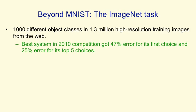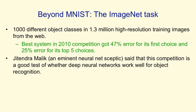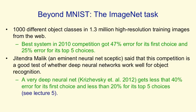Jitendra Malik, who is an eminent neural net sceptic and a leading computer vision researcher, has said that this competition is a good test of whether deep neural networks can work well for object recognition. And a very deep neural network can now do considerably better than the thing that won the competition — it can get less than 40% error for its first choice and less than 20% error for its top five choices. I'll describe that in much more detail in lecture five.